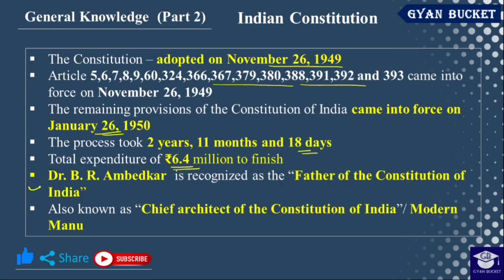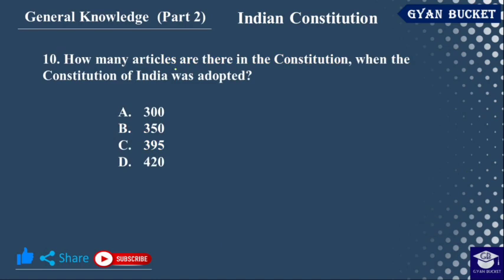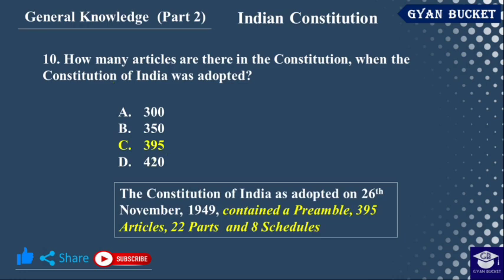Who was the Father of the Constitution of India? How many articles are there in the constitution when the Constitution of India was adopted? It had a Preamble, 395 articles, 22 parts, and 8 schedules.